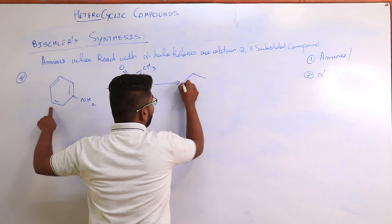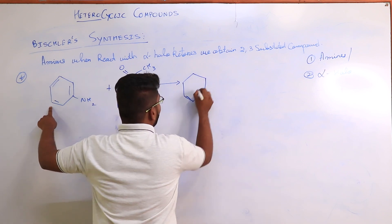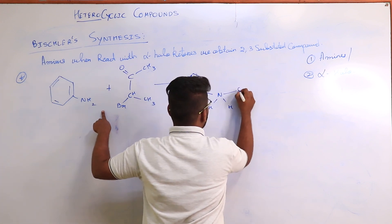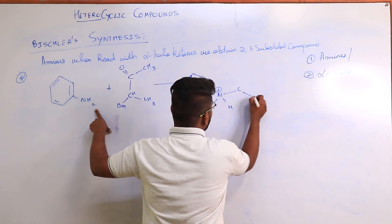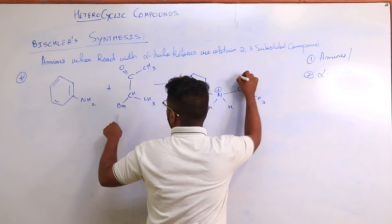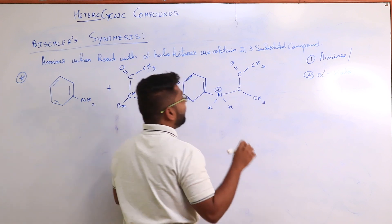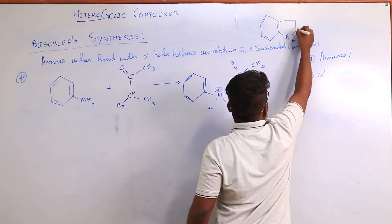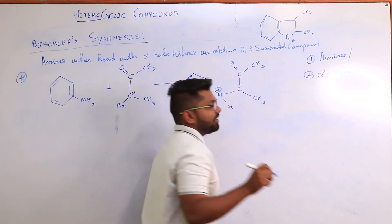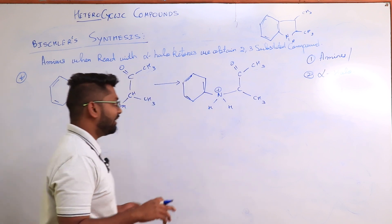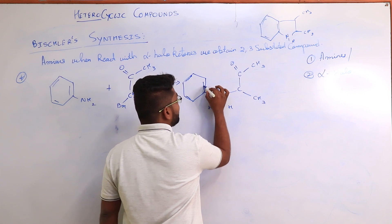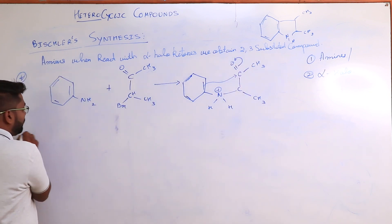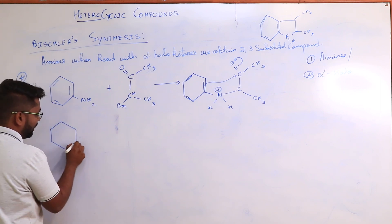This alpha-halo ketone undergoes reaction to give a derivative of the amine itself. What we are forming is: NH, with the next bond being positive, making the nitrogen positive; CH3 is eliminated out and it is forming C double bond O with CH3. The target molecule is of course the indole molecule, and here we are going to find a substituted indole — two methyl groups are substituted on the indole. Now these pi electrons will go and attack this carbon, so the oxygen will get the lone pair of electrons.